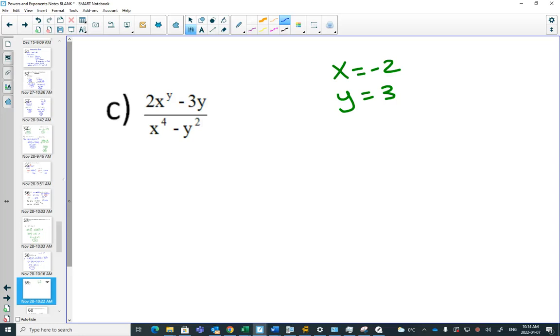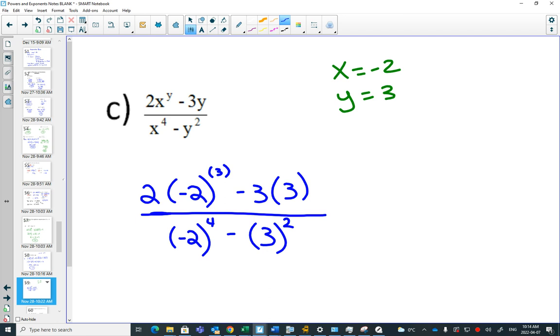Let's see how you did. We have a 2. Instead of the x, we'll write a negative 2. Instead of the y, we'll write a 3. Minus 3. Instead of the y, 3. Divide it by negative 2. 4 minus 3 squared. Step 1. Plugging things in. I mean, if you always plug things in with brackets, it's pretty hard to mess up step 1.